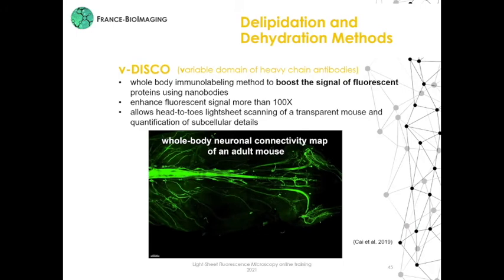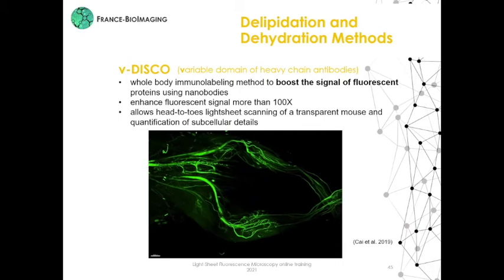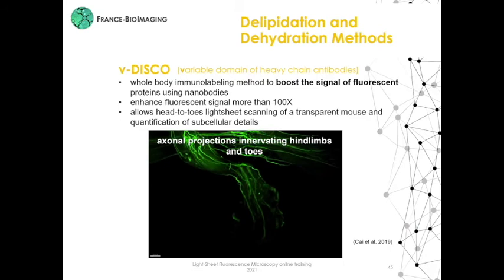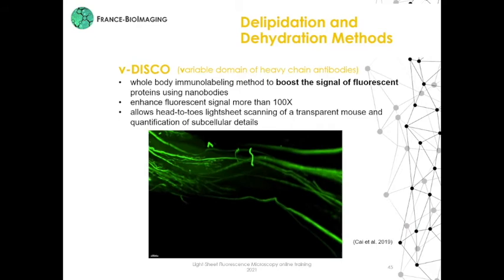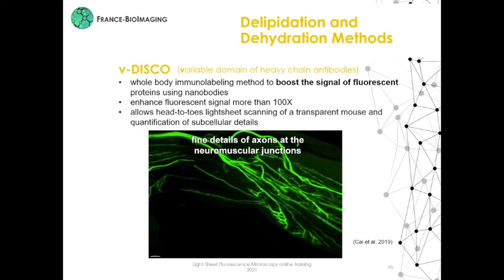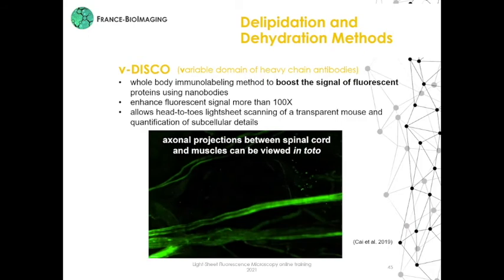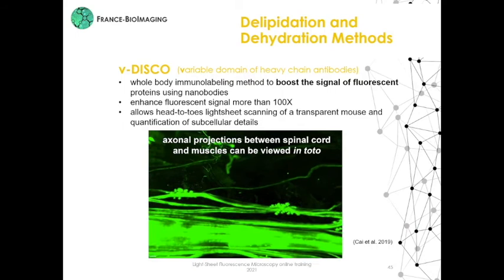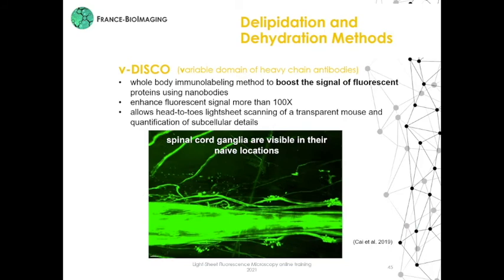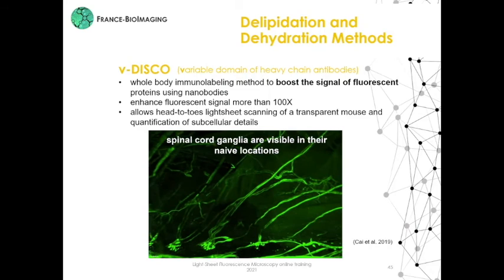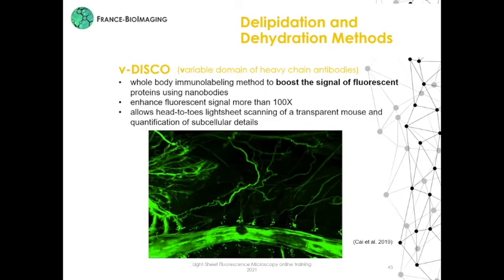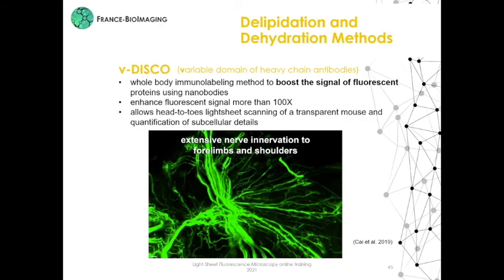Whole-body neuron connectivity map of an entire mouse. Axonal projections innervating the hindlimbs and toes. Fine details of axons at the neuromuscular junctions. Axonal projections between spinal cord and muscles can also be viewed in totality. Spinal cord ganglia are visible in their naive locations. Spinal cord and axons are seen at the same time, as well as extensive nerve innervation to forelimbs and shoulders.